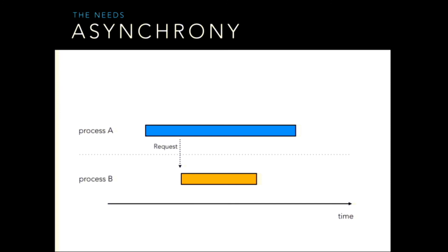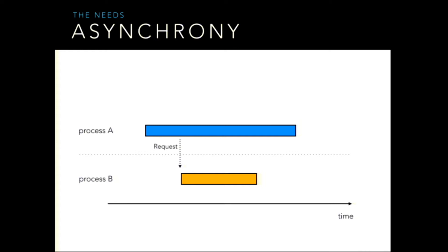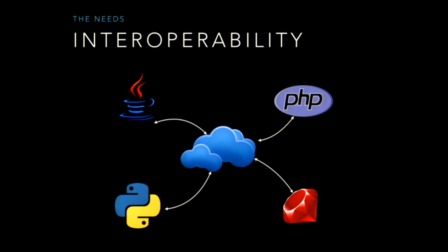In short, we need asynchrony. If process A is our user and process B is our application, when the user sends a request, we want the user to continue navigating our website while the application does the heavy job in the background and eventually notifies the client. Another property we'd like is interoperability — supposing you have many applications written in different languages, you want a structure where every application can construct a message and send commands to our catalog generator, which interprets each command and does its job.